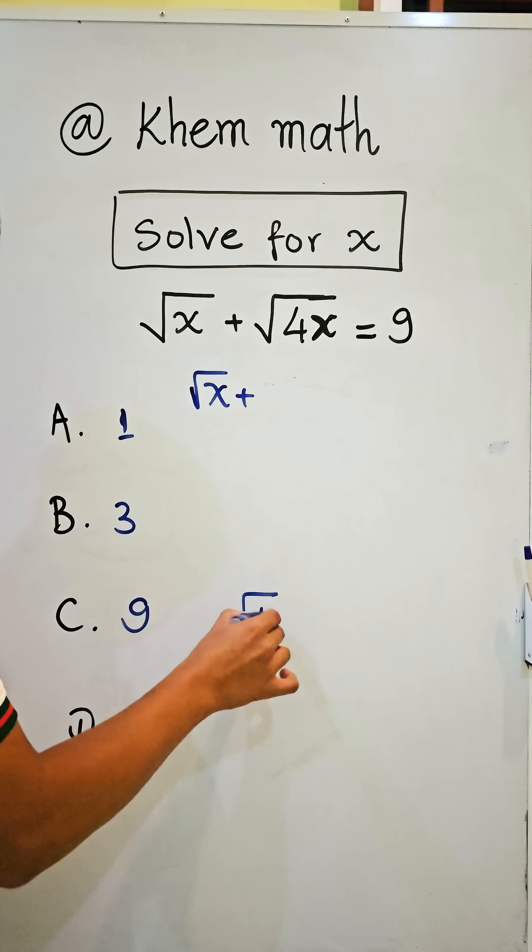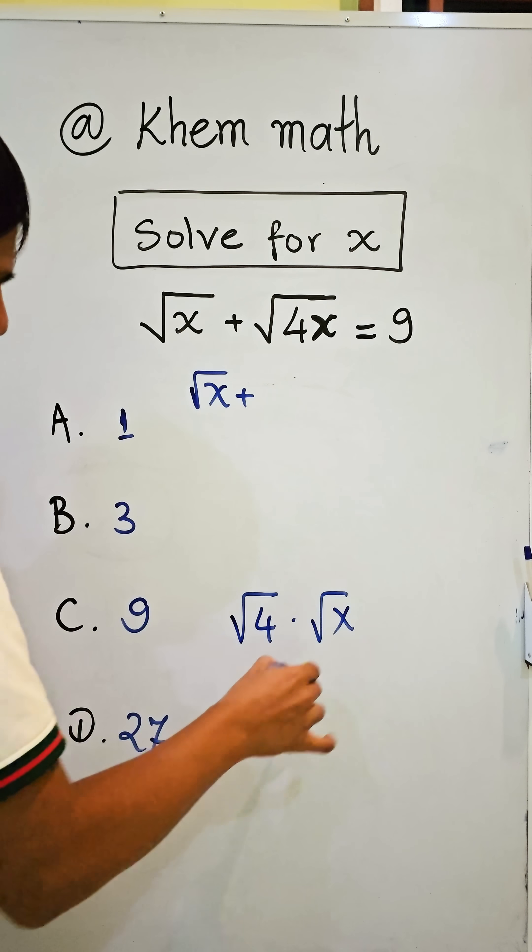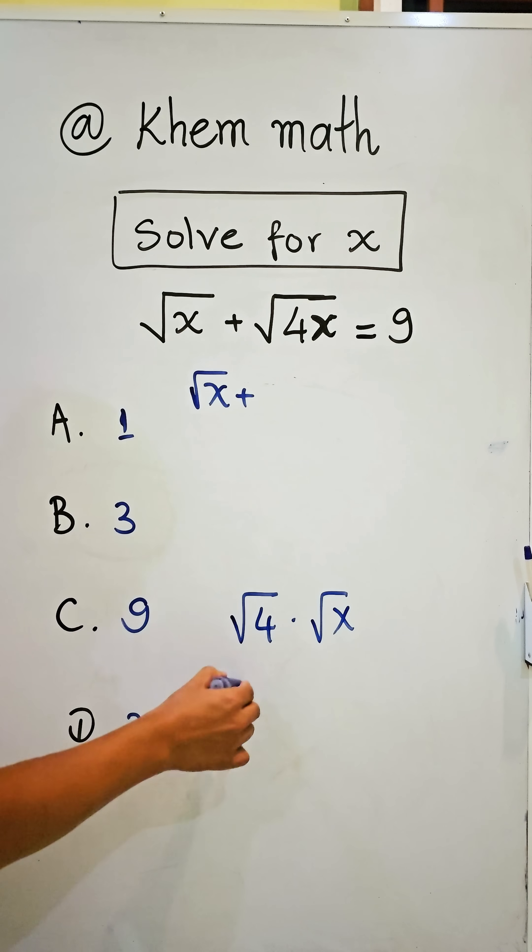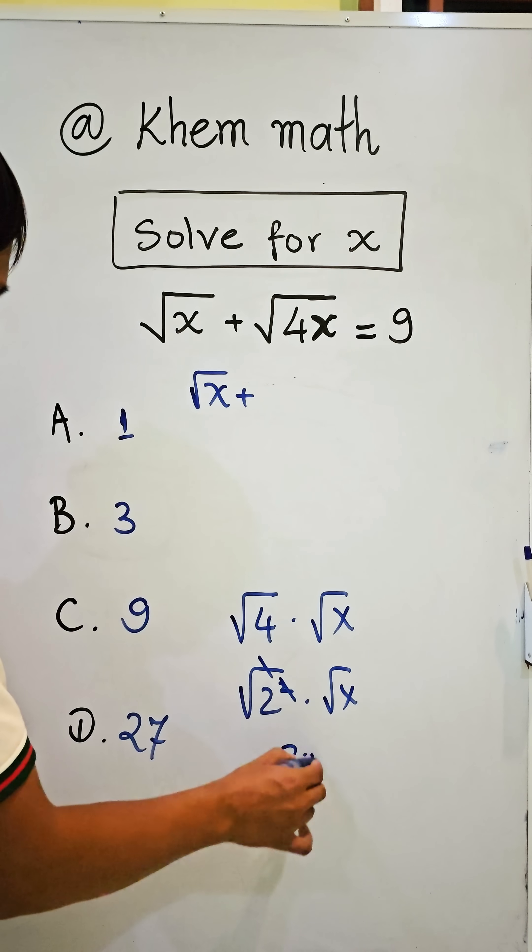It's square root of 4 times square root of x. And square root of 4 is equal to square root of 2 squared times square root of x. We simplify square root with square, we get 2 times square root of x.